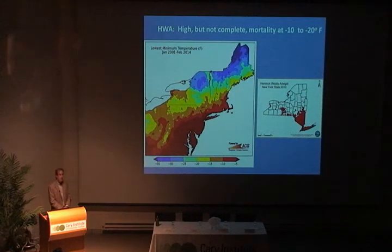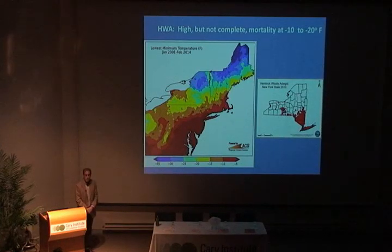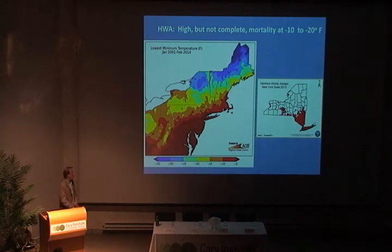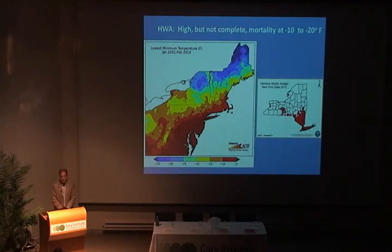The other thing happening, of course, is climate change. The part of the climate system changing most rapidly is cold winter nights — those cold winter nights are getting less frequent. Both of these factors — the insect's evolving cold tolerance and warming winters — lead you to believe that hemlock woolly adelgid is likely to spread throughout the region, perhaps eventually into even the colder northern areas.